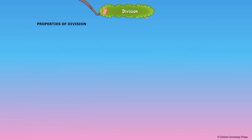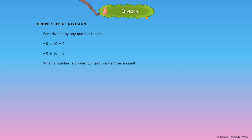Properties of division: 0 divided by any number is 0. For example, 0 divided by 10 is equal to 0, and 0 divided by 16 is equal to 0. When a number is divided by itself, we get 1 as a result.